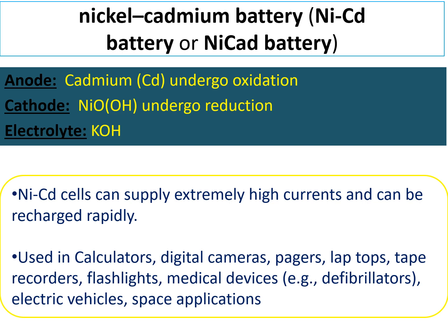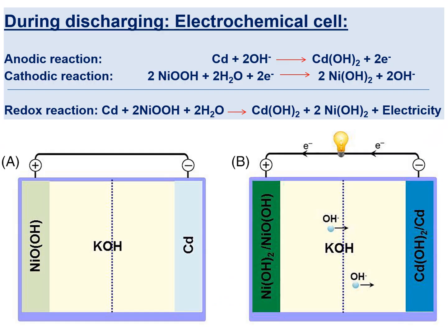The second example of a rechargeable battery is the nickel cadmium battery, also called a NiCad battery. Here, cadmium is the anode — it undergoes oxidation. Nickel oxyhydroxide (NiOOH) acts as the cathode — it undergoes reduction. The electrolyte is KOH. The NiCad battery can supply high current and can be recharged rapidly. It is used in calculators, digital cameras, pagers, laptops, recorders, flashlights, medical devices, and space applications.